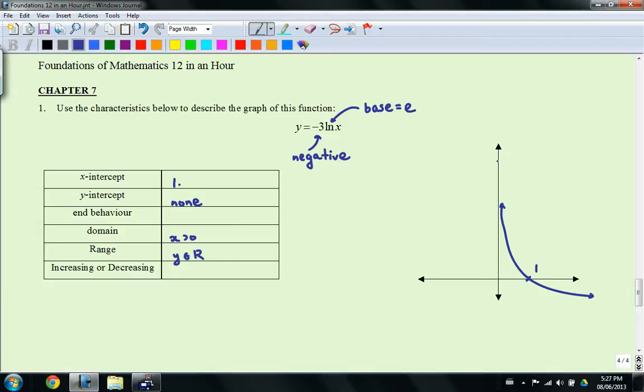The end behavior. Now, it matters if it's increasing or decreasing because this one is decreasing. It actually comes from quadrant 1 and goes into quadrant 4. So it's important for you to be able to make that distinction. And it's decreasing. So we already talked about that part.